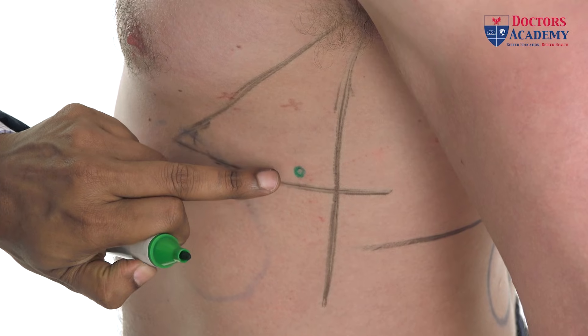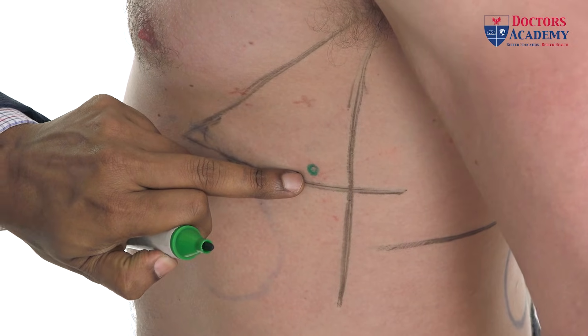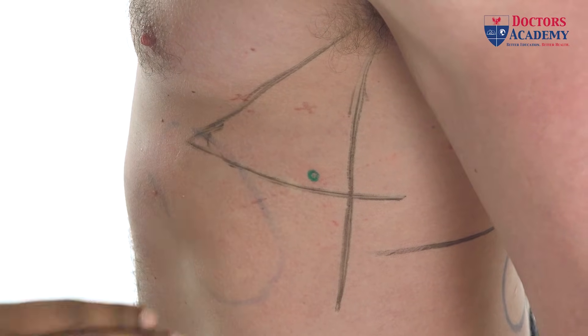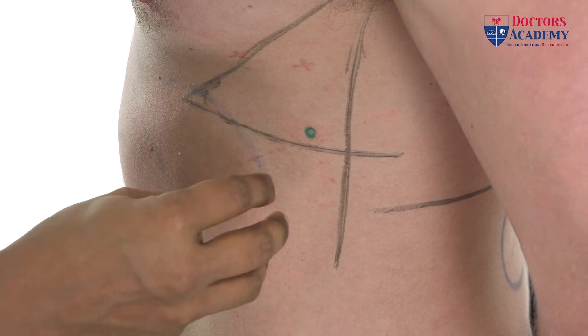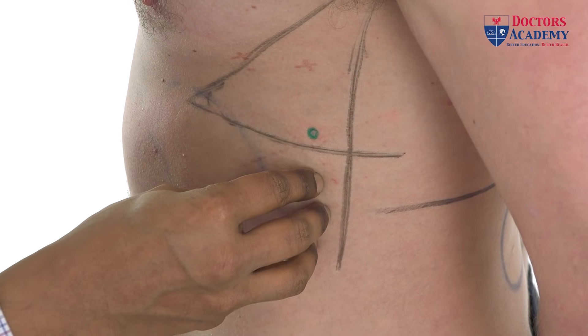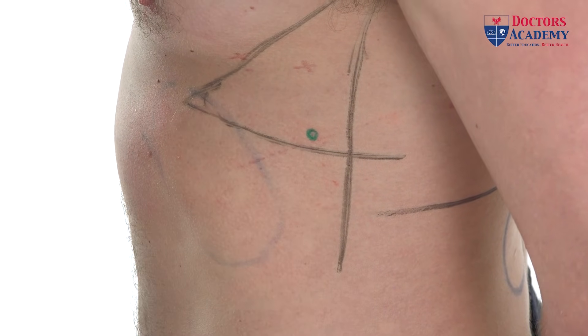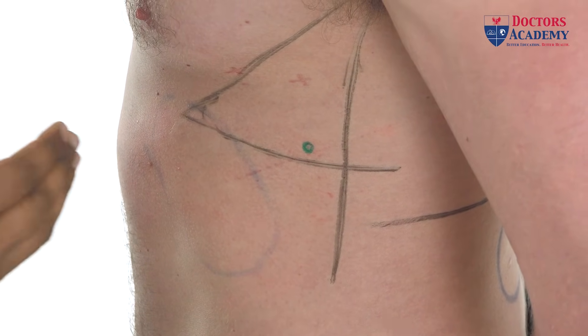That is the ideal point for chest drain insertion. The risk of going lower down is damage to the spleen on the left side or the liver on the right side.